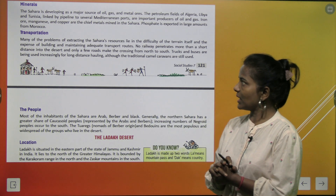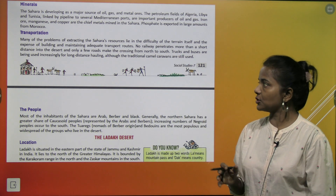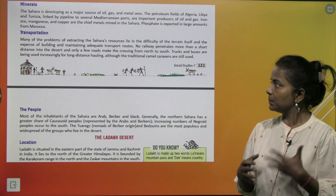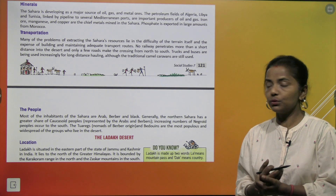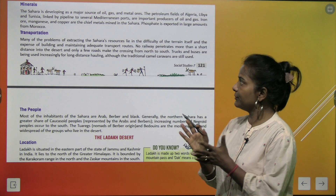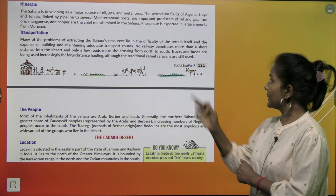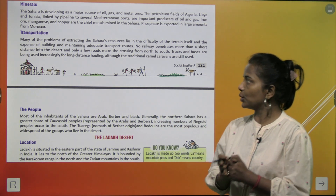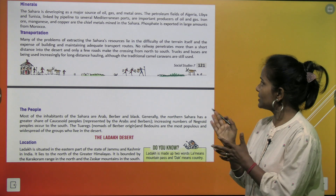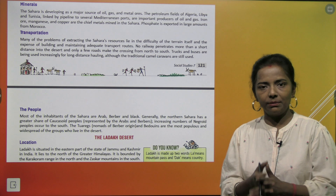Transportation: many problems of extracting the Sahara's resources lie in the difficulty of the terrain and the expense of building and maintaining adequate transport routes. No railway penetrates more than a short distance into the desert and only a few roads make the crossing from north to south. Trucks and buses are used increasingly for long-distance hauling, although the traditional camel caravans are still used.